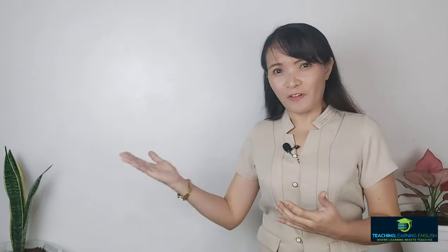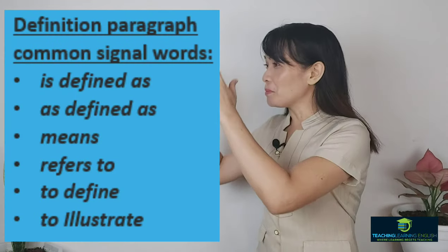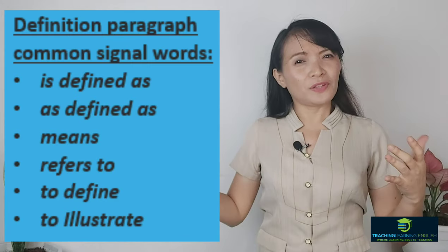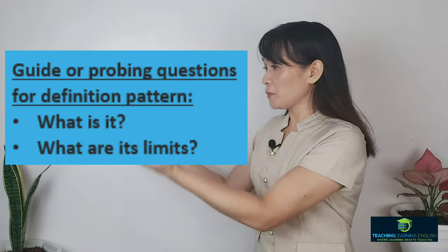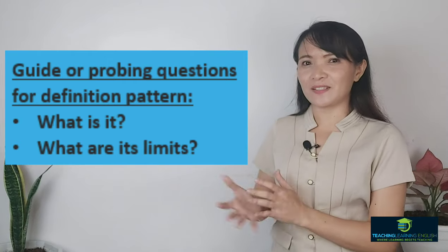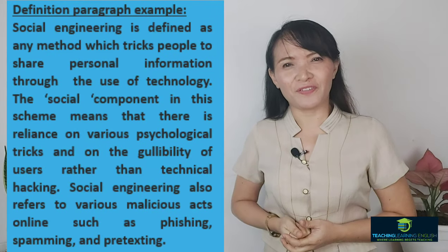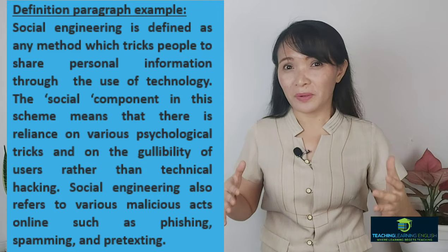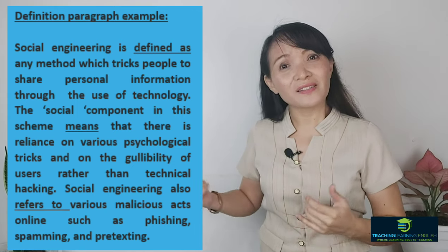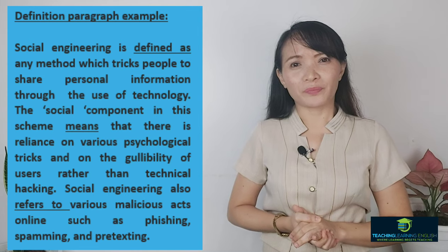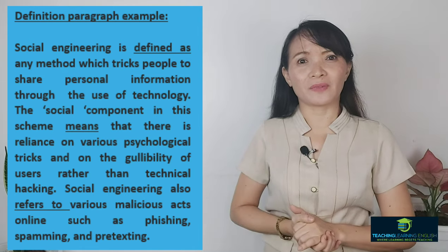Common signal words for definition are: is defined as, means, refers to, to define, to illustrate. Guide questions include: What is it? What are its limits? Here is an example of a definition paragraph. By looking at the paragraph, what are some signal words? The underlined words are the signal words — you can see 'defined as' and other underlined terms throughout.